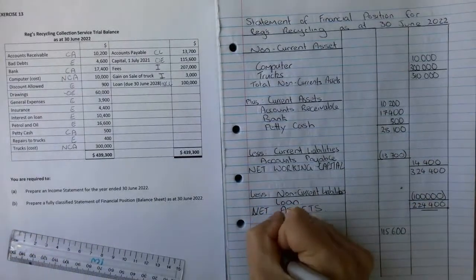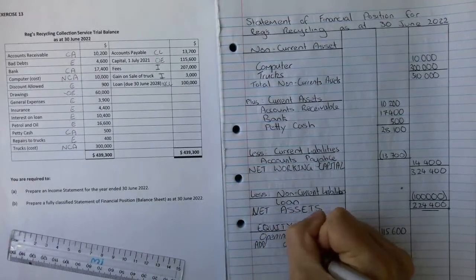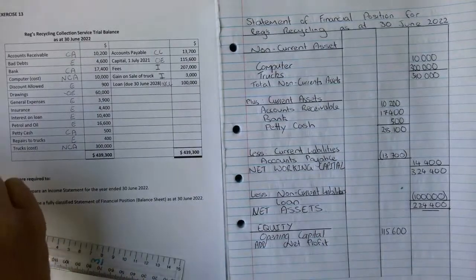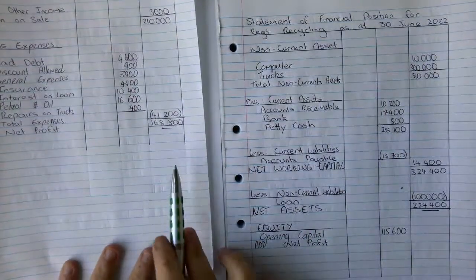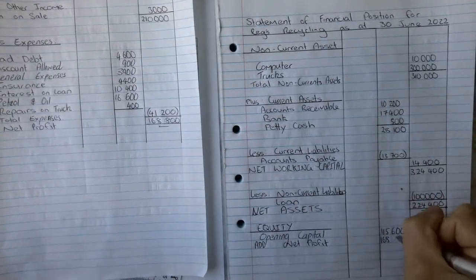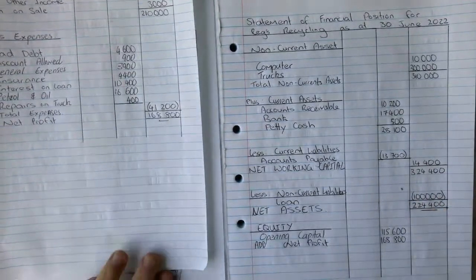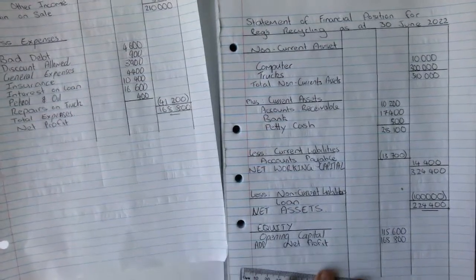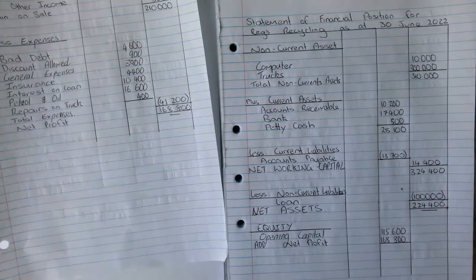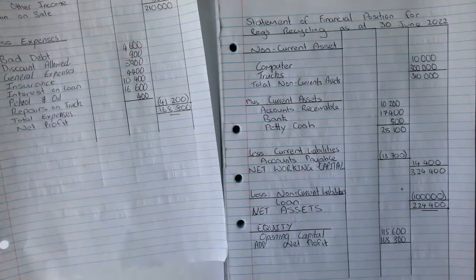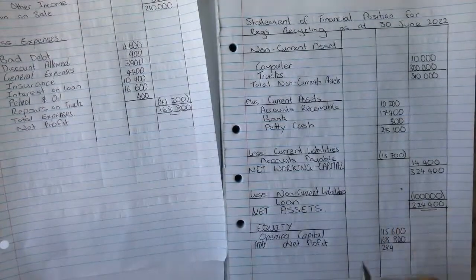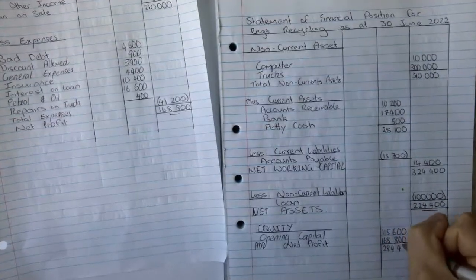We're going to add or plus our net profit, which we can get from our income statement. We can see over here our net profit is $168,800. We're going to add those two together, which gets to $284,400.